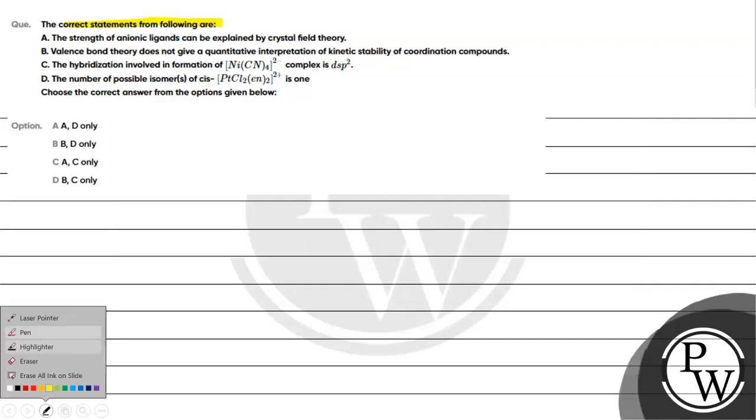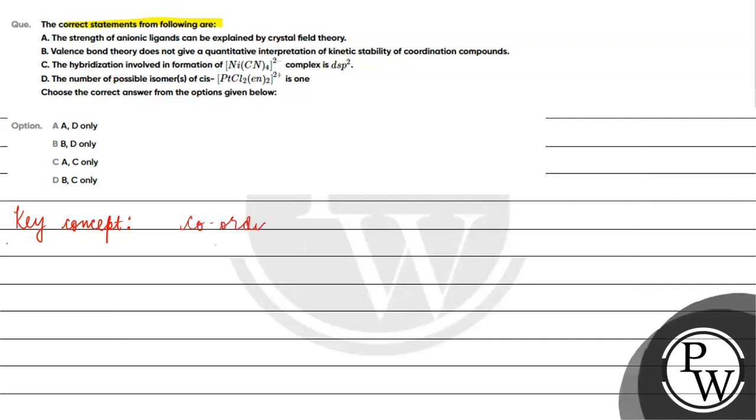We need to determine which options are correct. Option A is A and D, option B is B and D only, option C is A and C only, option D is B or C only. Key concept for this question is coordination compounds, the coordination complexes.